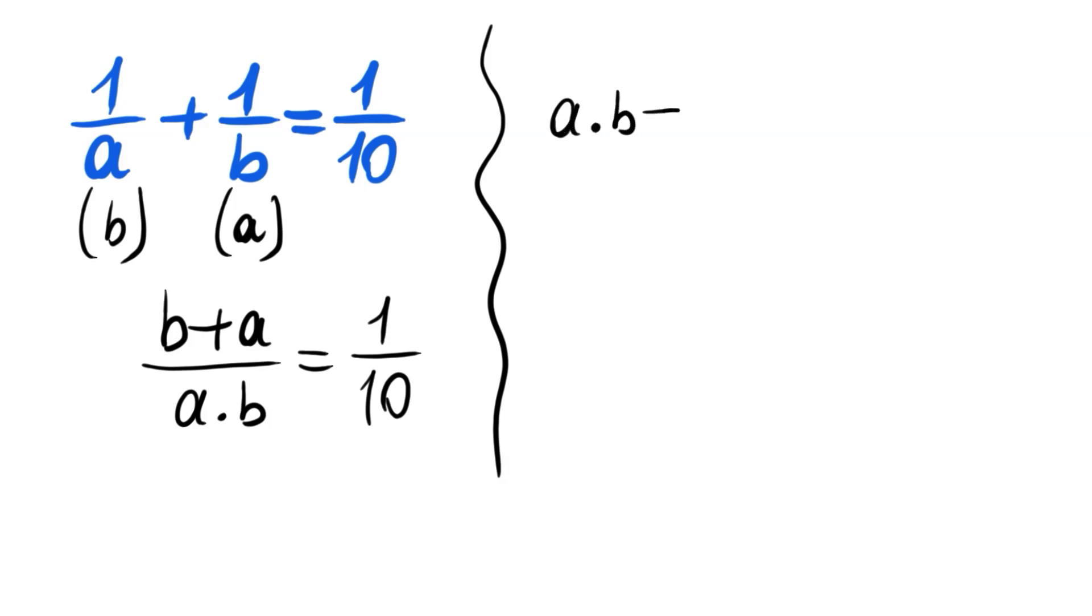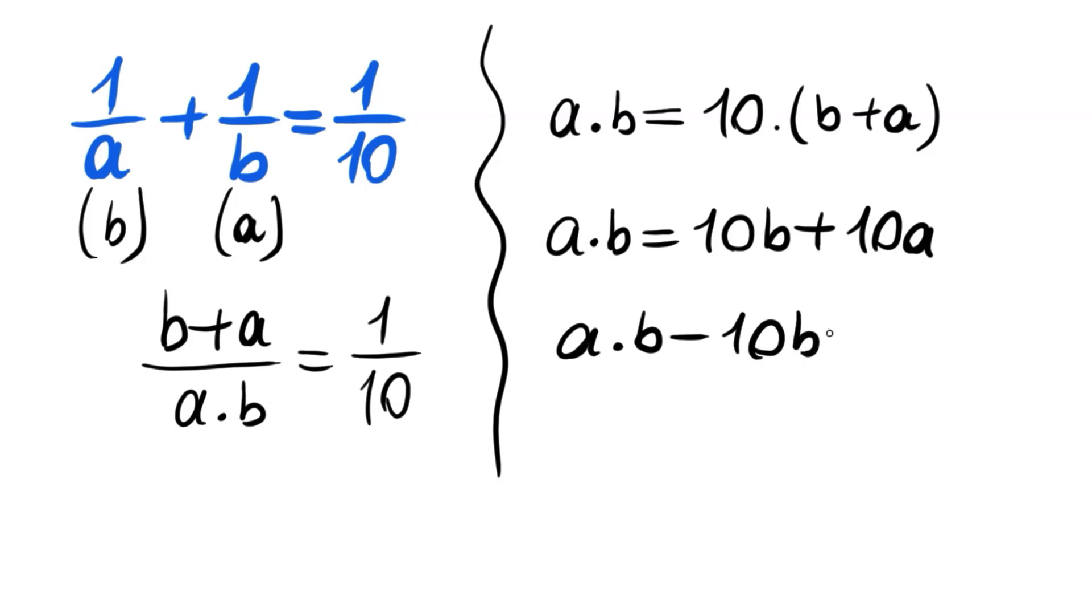Or distributing, we can write a times b is equal to 10 times b plus 10 times a. Now we will have everything on the left-hand side: ab minus 10b minus 10a is equal to 0.